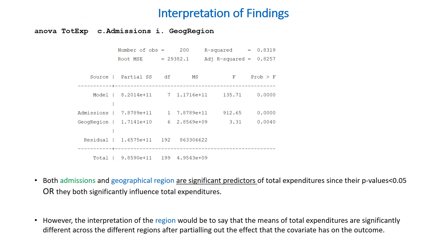Then we simply run the analysis and we have the following output. In this output, we have the source of variation, which is the model, admissions, geographic region, and the residual. We are dealing with partial sum of squares, and we have the degrees of freedom, the mean square, the F value for each of those sources of variation, as well as the p-value. We notice that both admissions and geographical region are significant predictors of total expenditures, since their p-values are less than 0.05.